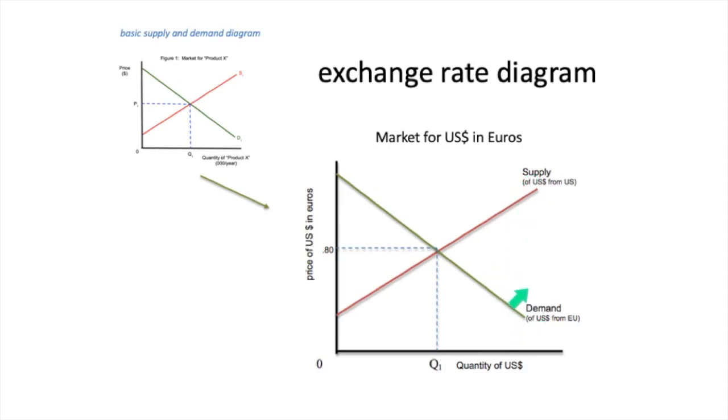But there's a couple subtle switches of mind that we have to do. The first thing is we're looking for the market for dollars in euros. So who has the dollars? And here's where you need to suspend reality. You have to suspend reality in a lot of international diagrams, but definitely in the exchange rates, because you have to live in a world where only people in the United States have dollars.